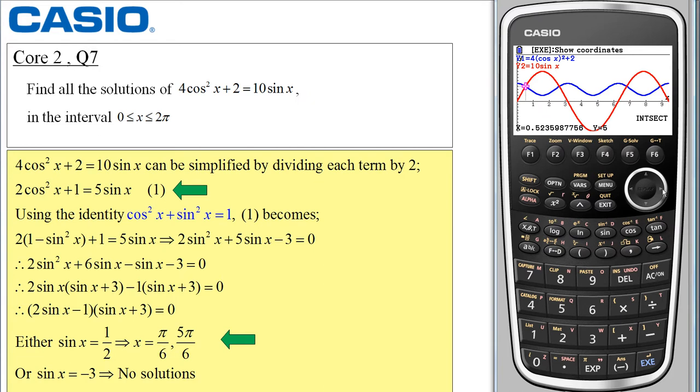Now if I move on and scroll along the next solution is when x equals 2.617 etc. Well that's actually 5 6th of pi and again a simple calculation will confirm this.